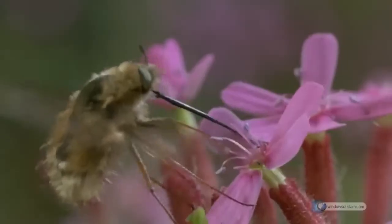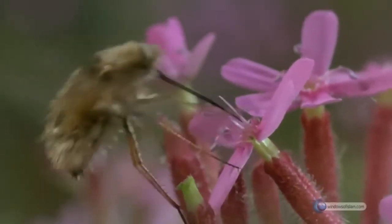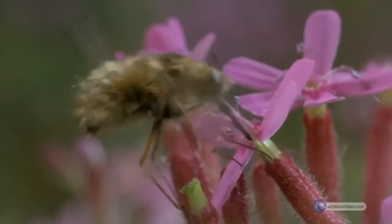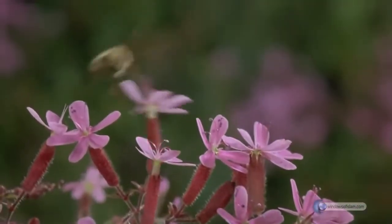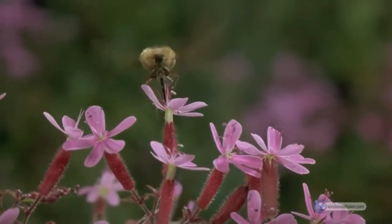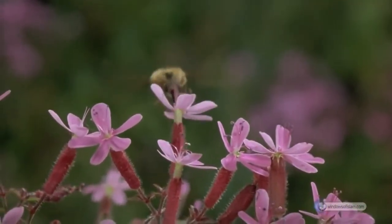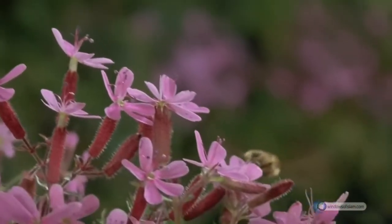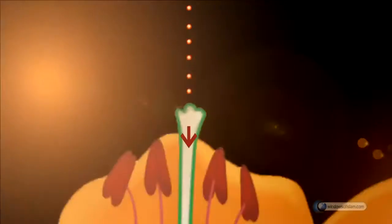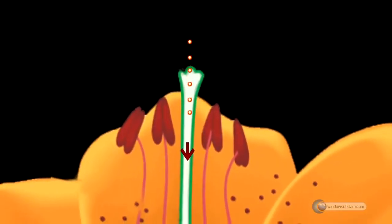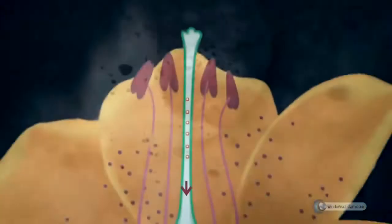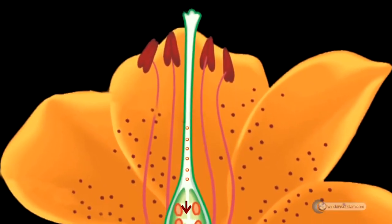Afterwards, this pollen grain moves downwards from the stylus and reaches the ovules of the ovaries through a tube. The male reproduction cell passes from this tube and unites with the female reproduction cell in the ovule.